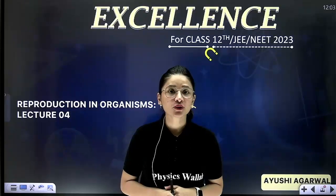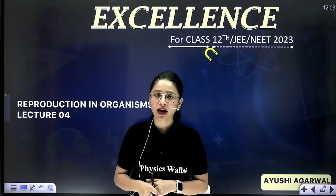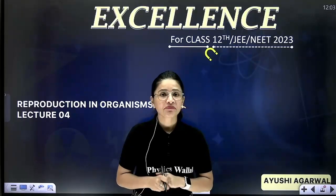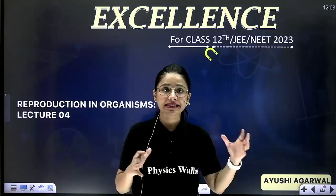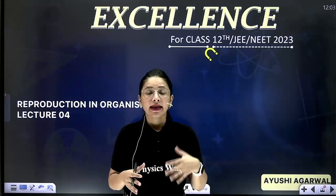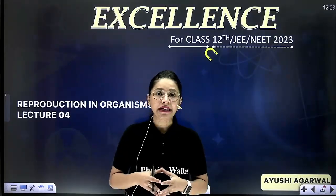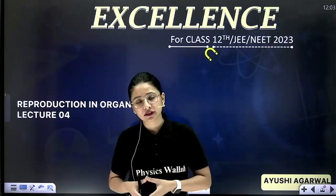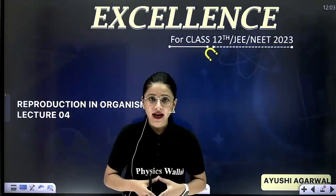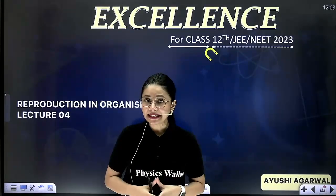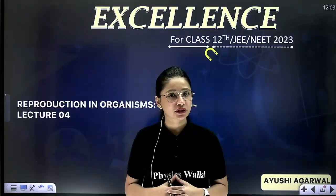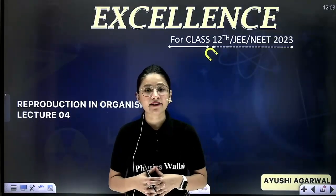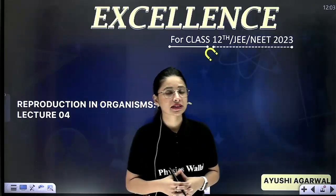Today we are going to complete the chapter - the first chapter, Reproduction in Organisms. So far, in the first three lectures, we have discussed what is reproduction, types of reproduction, that is asexual and sexual reproduction. Then we have discussed asexual reproduction in detail, all natural propagation, artificial propagation and so on. Today we are going to complete this chapter by understanding all the events of sexual reproduction. In my last class, I have already told you that sexual reproduction is completed in three events. There are three steps to complete this phenomenon.